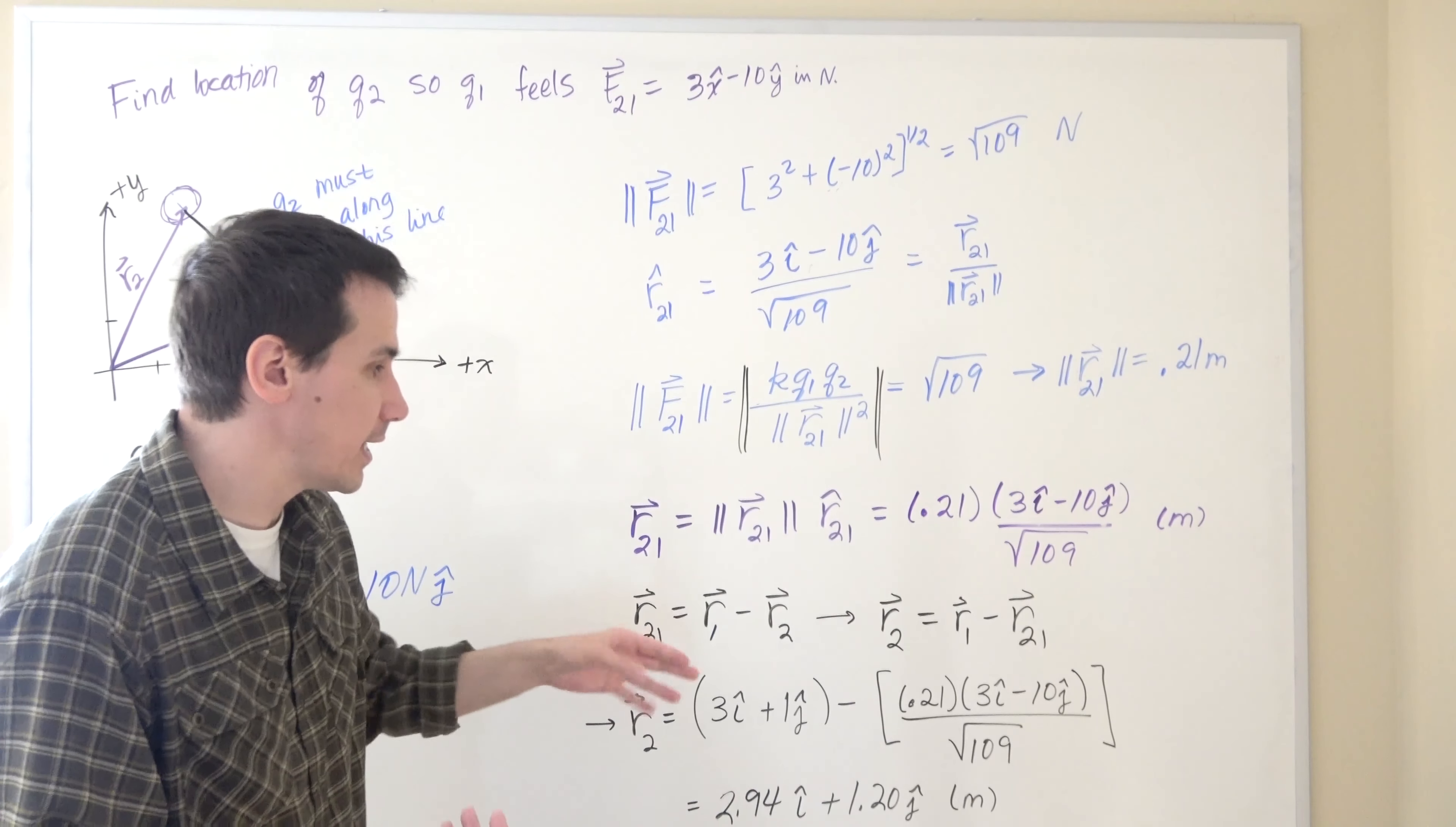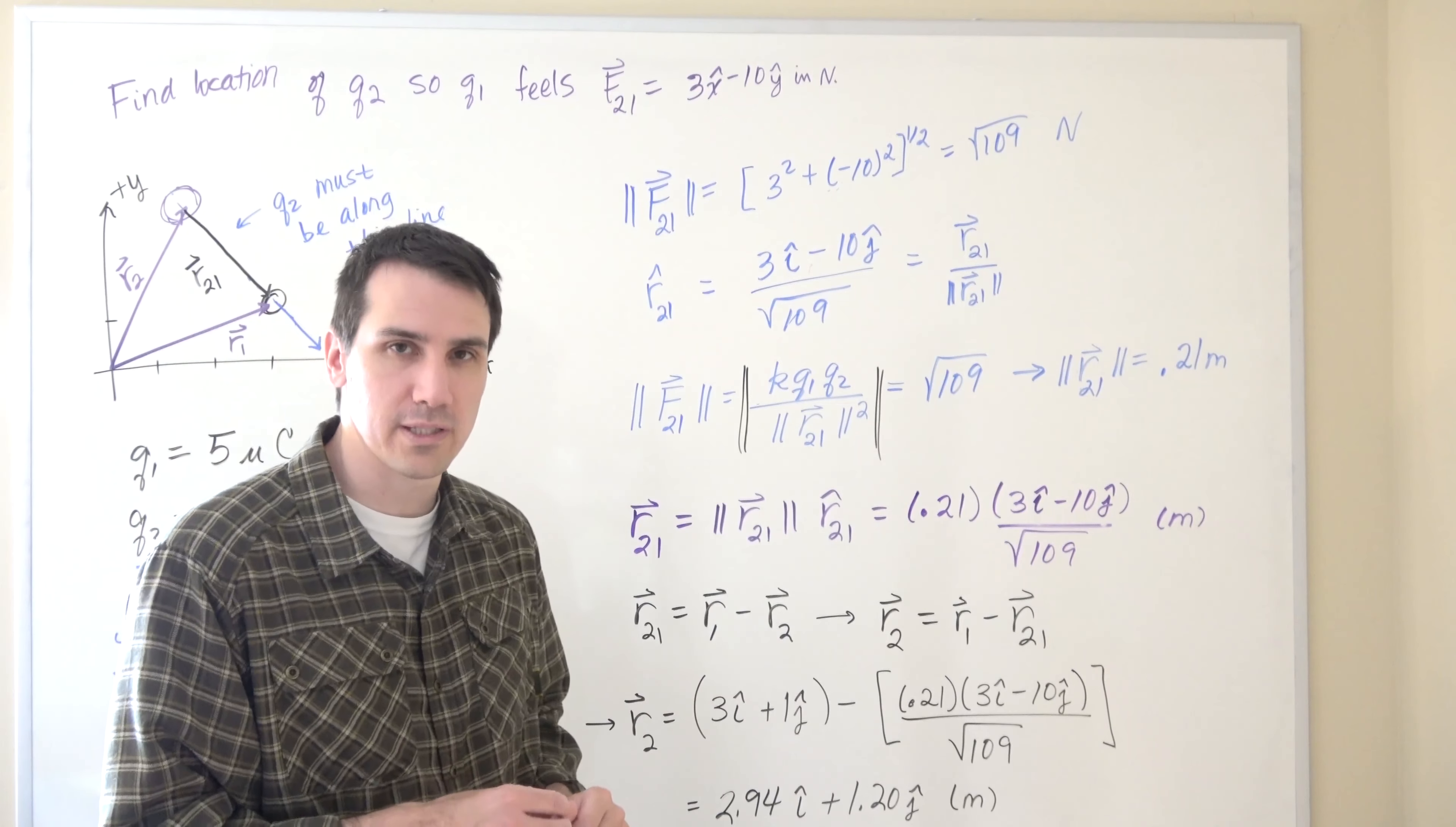So by knowing the location of charge 1 and the vector that points between them, I can actually solve this equation for r2. So r2 vector equals r1 vector minus r21, just solving this equation here.